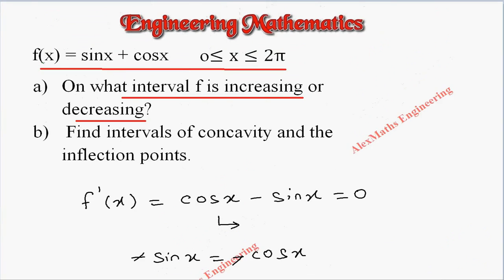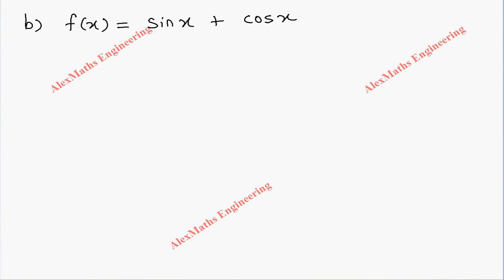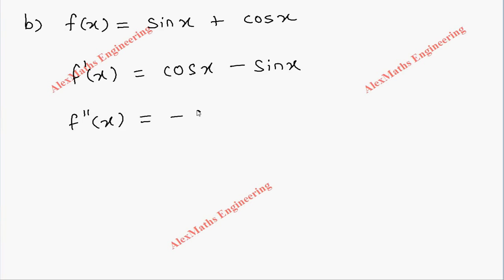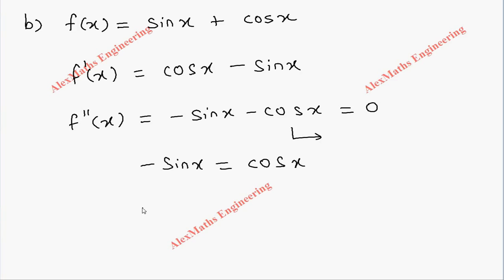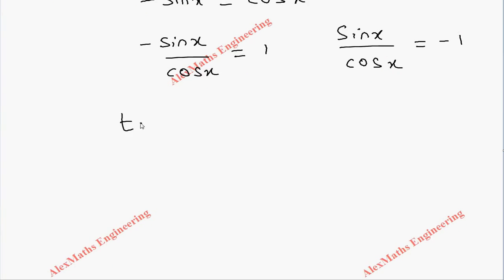Now for Part 2, we need to find the intervals of concavity and the inflection points. Starting with f(x) = sin x + cos x, we already have f'(x) = cos x − sin x. Then f''(x) = −sin x − cos x. Setting f''(x) = 0: −sin x = cos x, which gives sin x / cos x = −1, so tan x = −1.